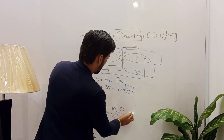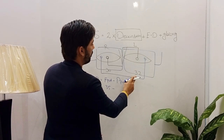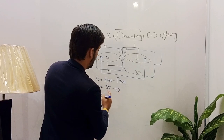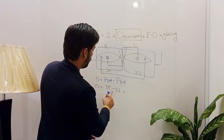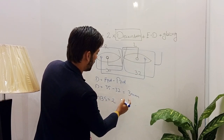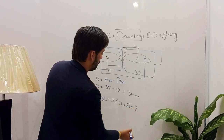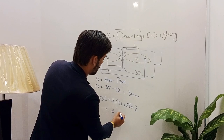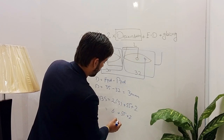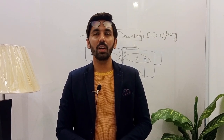For the left eye, the monocular IPD was 32 mm. Decentration = 35 − 32 = 3 mm. Applying the formula: 2 × 3 + 55 + 2 = 6 + 55 + 2 = 63 mm. So the minimum blank size for the left eye is 63 mm. All concepts regarding decentration and minimum blank size are now covered — see you in the next video.